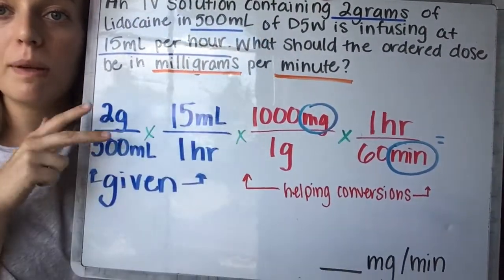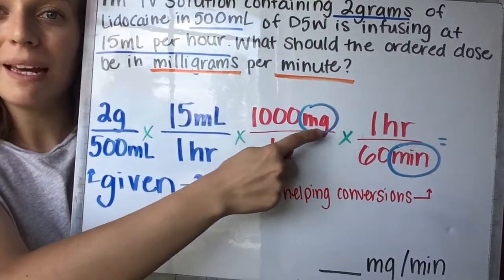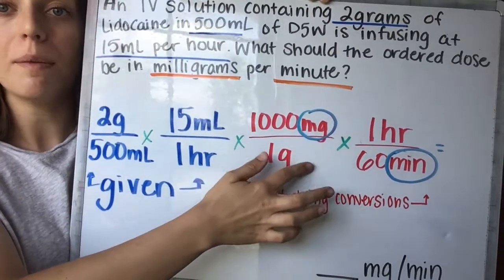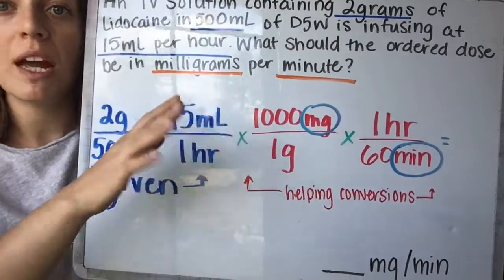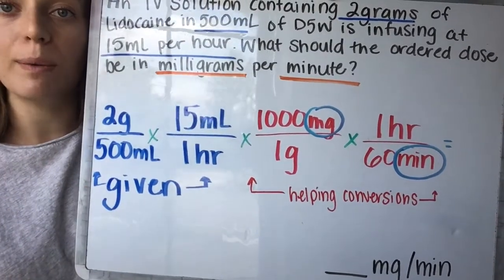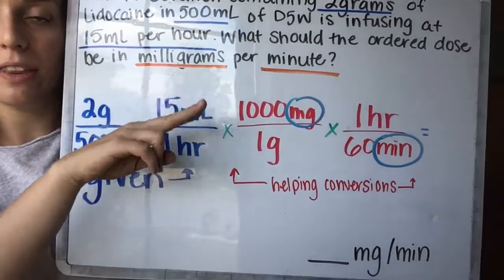If we needed this in a different place, or if maybe we were given a different given in the question and maybe I had to put milligrams on the bottom and grams on the top, you can flip them. It's the same to say 1 gram equals 1000 milligrams. It's the same to say 1000 milligrams equals 1 gram. They can be inverted.